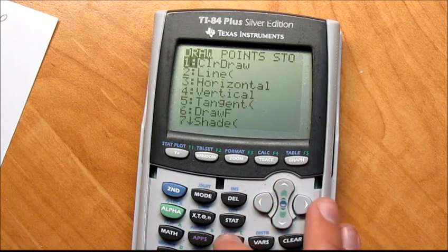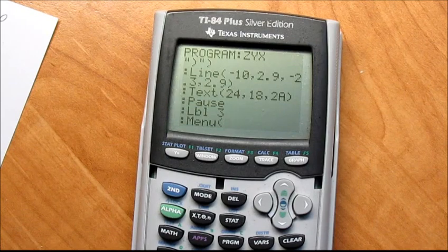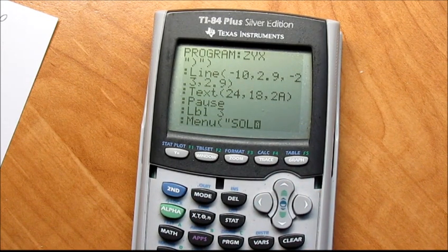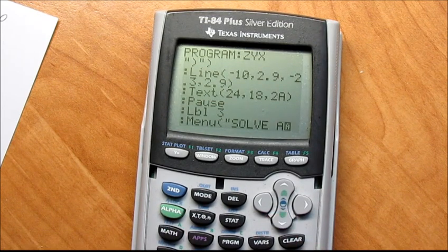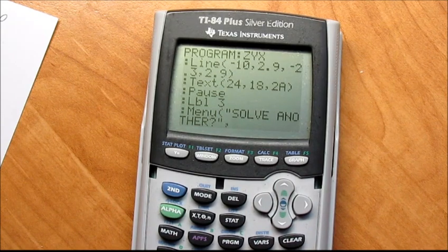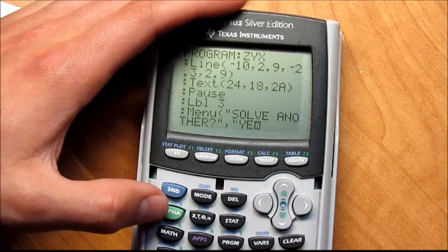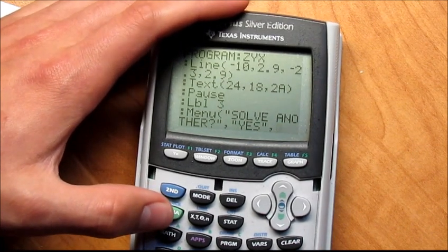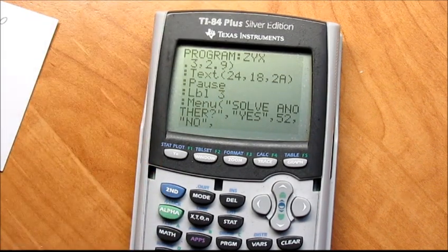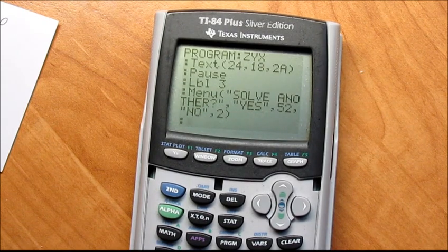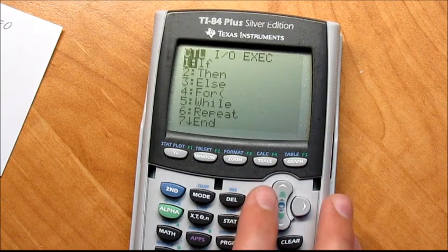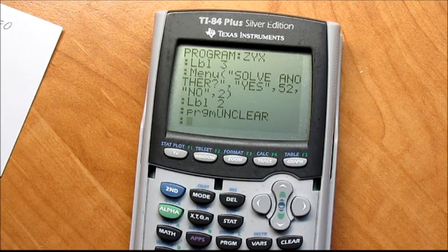And then program label 3, and then we're going to set up a menu. So program, and then scroll down to the define menu, and we're going to put in quotations, solve another, so second alpha, solve another. And then we're going to put comma, alpha plus, second alpha, yes, comma 52, comma, no, comma 2, end it with a parenthesis. And then set a label, and it's 2. And then program unclear, and then stop.